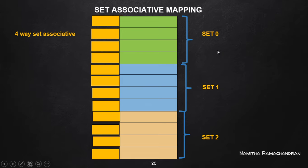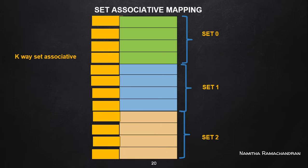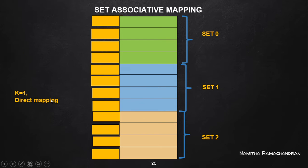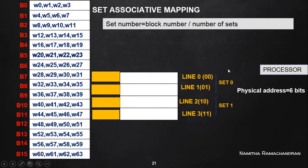Three-way set associative means three cache lines per set. In general, k-way set associative means k different cache lines per each set. If k equals one, then the set associative mapping is equivalent to direct mapping.